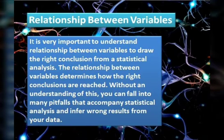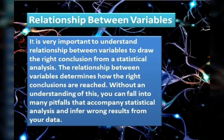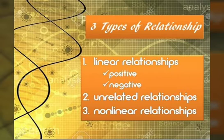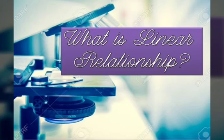Kinds of Relationships Between Variables. Before drawing a conclusion, you should first understand how one variable changes with the other. This means you need to establish how the variables are related — is the relationship linear, quadratic, inverse, logarithmic, or something else? There are three types of relationship: the first is the linear relationship, which consists of positive and negative. Second is the unrelated relationship. And the third is the non-linear relationship.